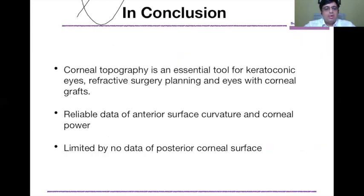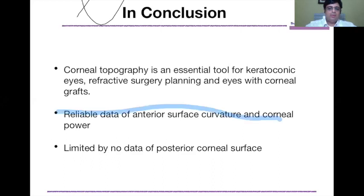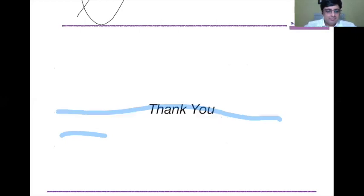To conclude: corneal topography is an essential tool for keratoconic eyes, refractive surgery planning, and eyes with corneal grafts. It gives reliable data on anterior surface curvature and corneal power. However, it is limited by the absence of posterior corneal surface data, which can only be obtained with the Orbscan, Pentacam, and anterior segment OCT. Thank you.